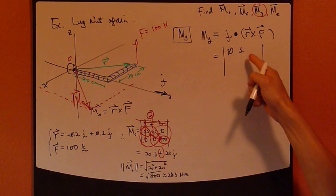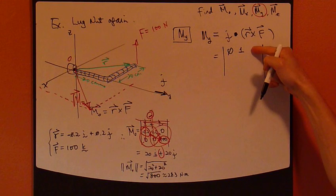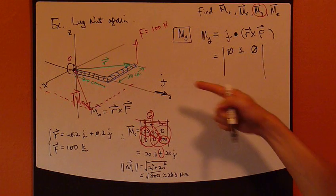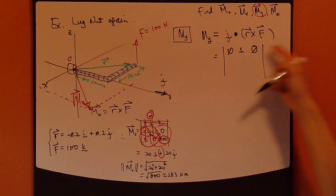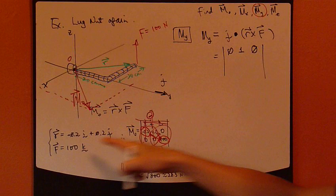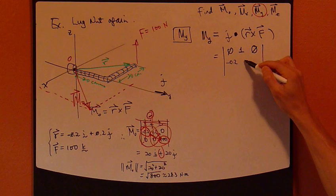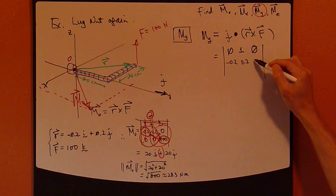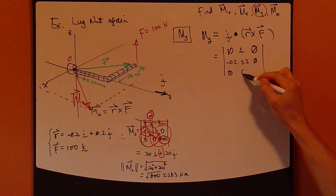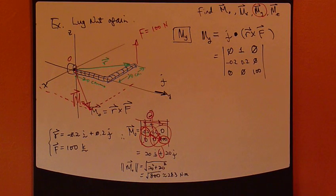The k component of the j vector is 0. Alright? So, that's pretty straightforward. The second row is the r. So, again, r from here, 0.2, and then 0.2, and 0. And then, f, so 0, 0, 100. Okay?